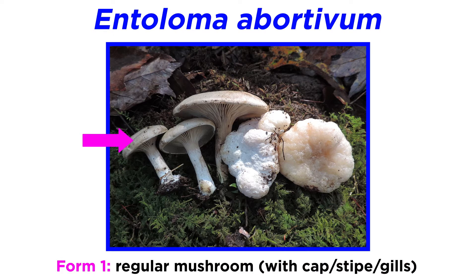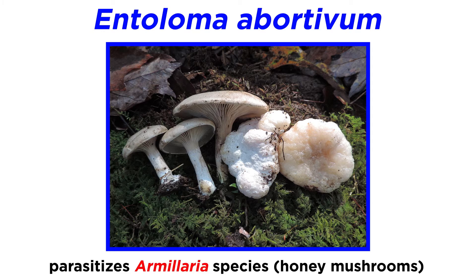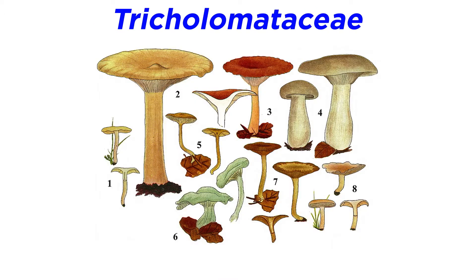The mushroom has two structural forms: one with a cap, stipe, and gills, and then the aborted form, which is an irregular mass of hyphal tissue. This fungus is believed to parasitize Armillaria species, or honey mushrooms, which we will discuss soon.